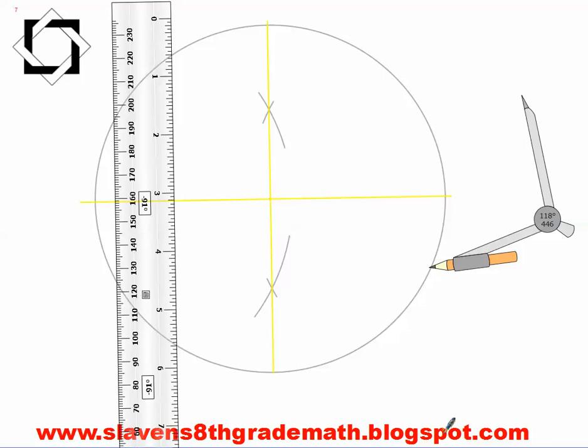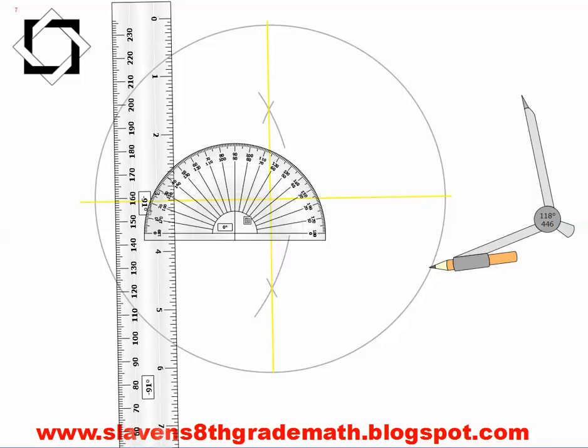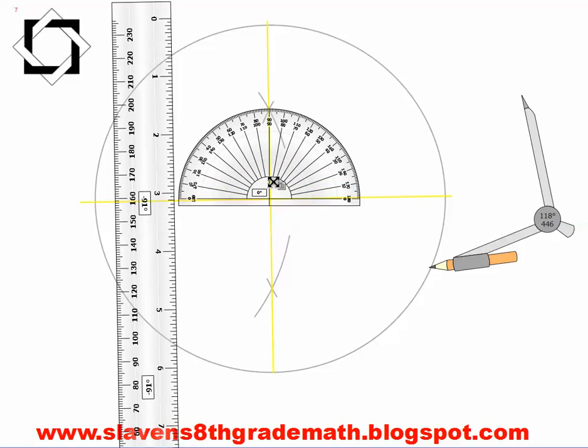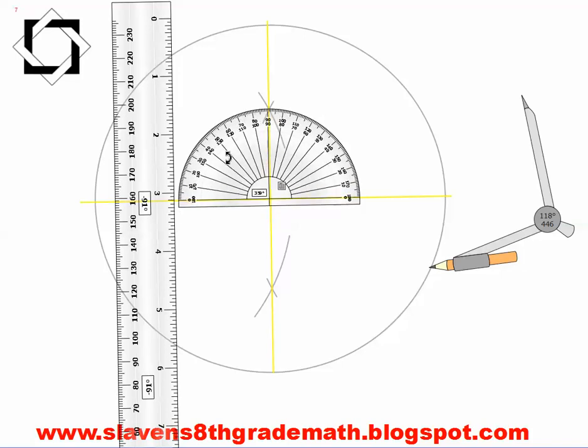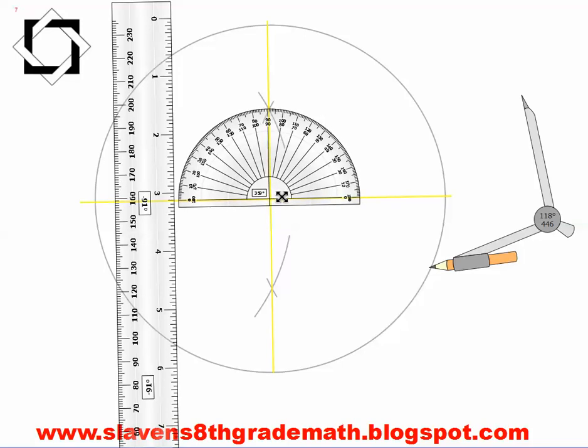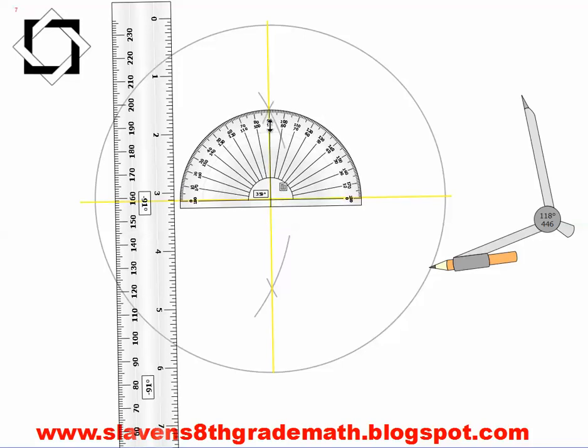Now if I were so inclined, I could take out a protractor and I could measure this, and sure enough, it's 90 degrees. But I knew that without measuring because we constructed it right.